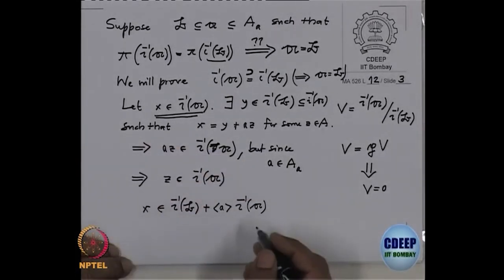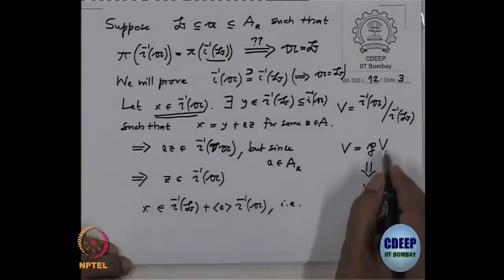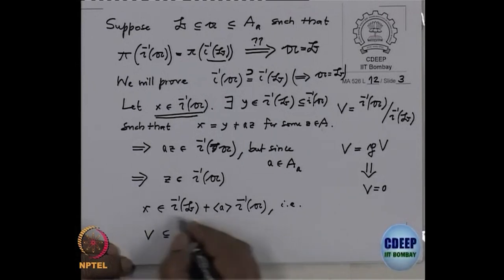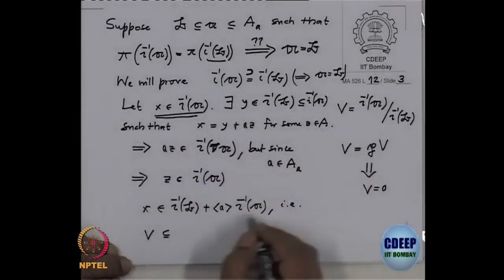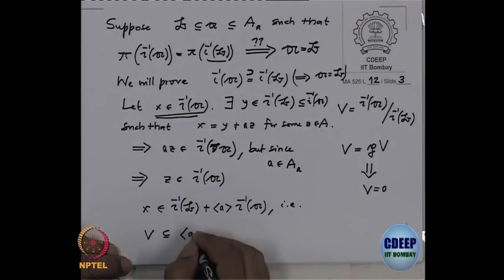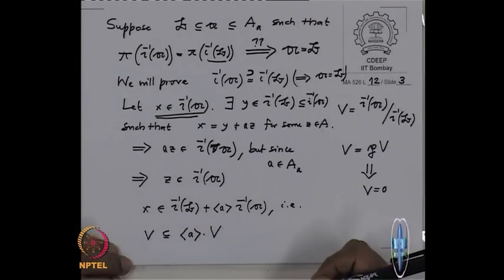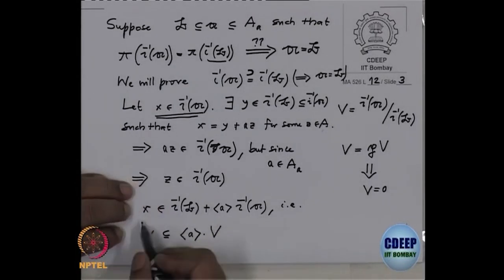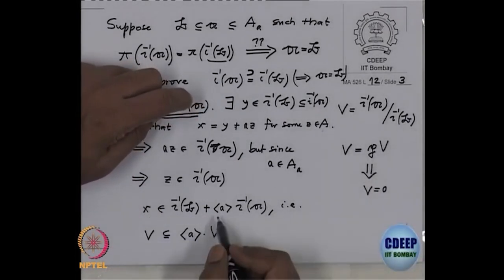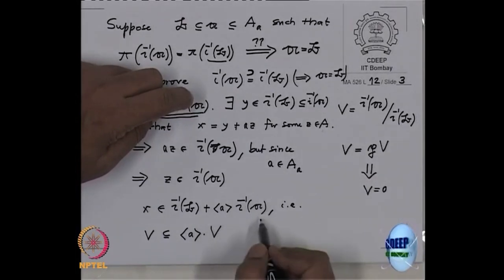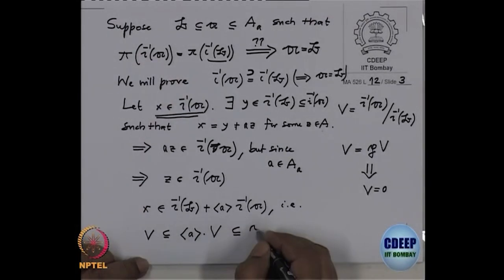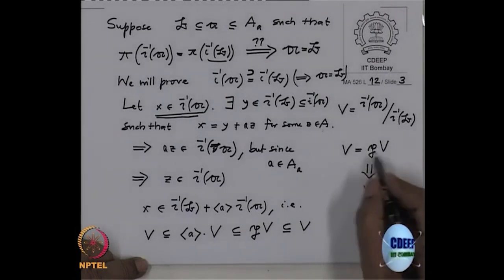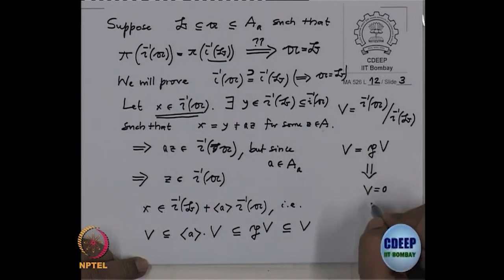So what did we prove? Starting with X in ι⁻¹(A), we proved that X belongs to ι⁻¹(B) plus the ideal (a)·ι⁻¹(A). That means when we read this mod ι⁻¹(B), V is contained in (a)·V, which is contained in P·V. So V = PV. Now use Nakayama's Lemma to say that V = 0, and then everything is done. So this proof is easy but tricky.